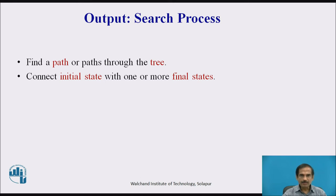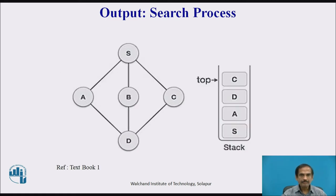In the search process we try to generate an output which might be a path or paths throughout the tree, connecting the initial state with one or more final states. We may keep track of node status using an appropriate data structure like a stack, and these combinations will generate a path or indicate the target state as our output.